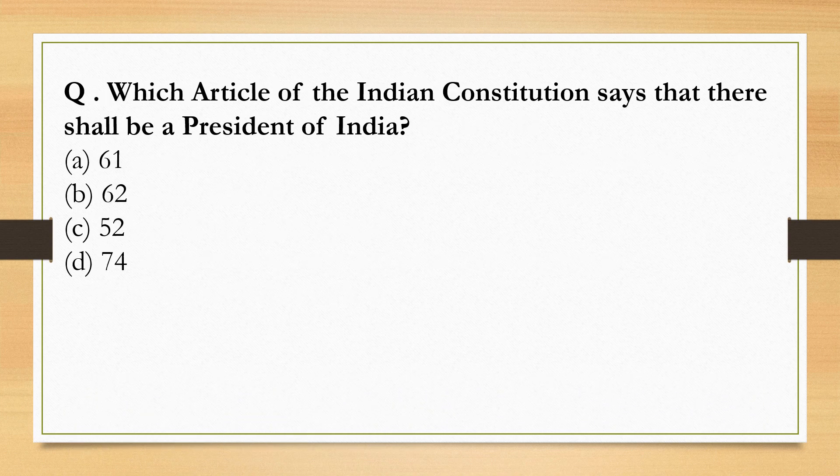Which article of the Indian Constitution says that there shall be a President of India? Articles related to the President's powers, tenure, ordinances, and pardon power are very important for exams. The article making provision for the President of India is Article 52.